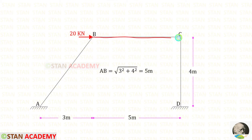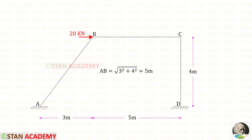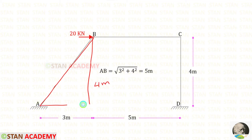The length of the horizontal member is 5 meter and the height of the vertical member is 4 meter. We have to find the inclined length of AB. We can use the Pythagorean theorem. Here we have 4 meter and here we have 3 meter. Taking the root of 3 squared plus 4 squared, we get AB which is 5 meter.